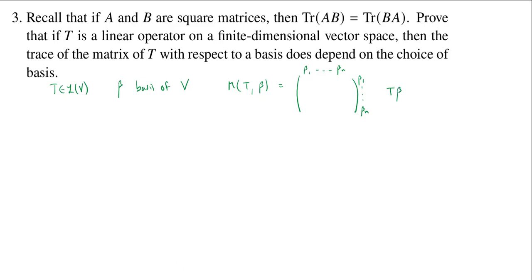So, for example, T of beta i is going to be the sum with coefficients a_{ki} times beta k, where a_{ki} is just the coefficient of beta k when I apply T to beta i. This notation can end up being a little bit cumbersome, so oftentimes people use a different type of notation: square brackets around T to indicate they're going to make a matrix, then put the basis of the domain on the bottom and the basis of the codomain on the top.